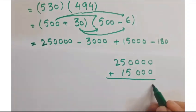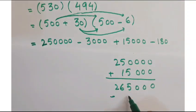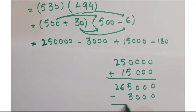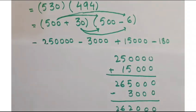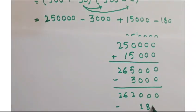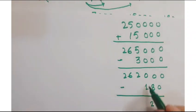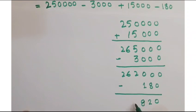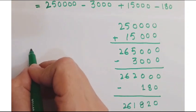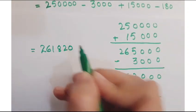So you get 265,000. Now subtract 3,000 and now subtract 180, so you get 262,000 minus 180 equals 261,820. So the required answer after simplification is 261,820.